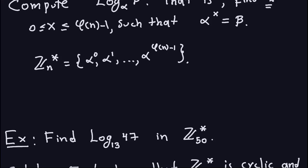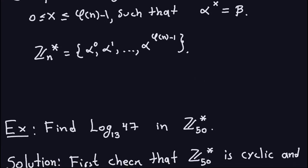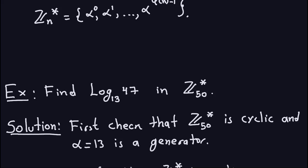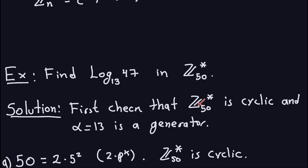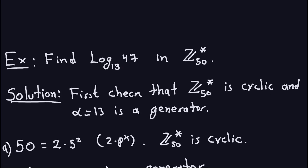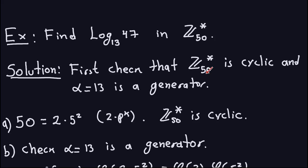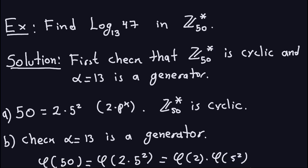Let's compute by hand: what is the log base 13 of 47 in Z50*? First I need to check that Z50* is cyclic and that 13 is actually a generator. Let's check that Z50* is cyclic — recall this only depends on how 50 factors. 50 = 2 × 5², which is of the form 2 × p^k with p an odd prime, so by the theorem from last time, Z50* is cyclic.